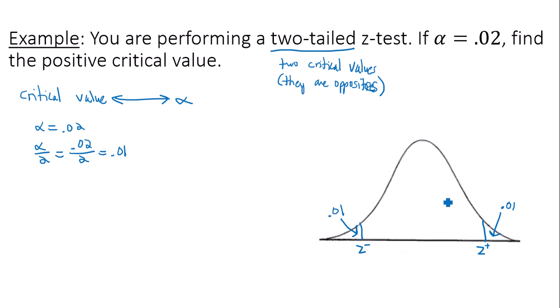Now, looking at my positive critical value I would like to find, I need to know area to the left. Well, area to the left is 1 minus the area to the right, so 1 minus 0.01, which is going to give us 0.99 in this case. So whenever I go to find my positive critical value, I know that my mean is 0, my standard deviation is 1, and my area to the left is equal to 0.99.